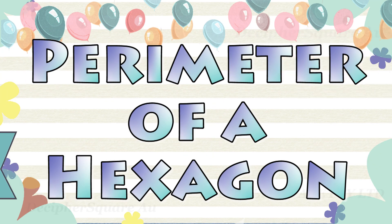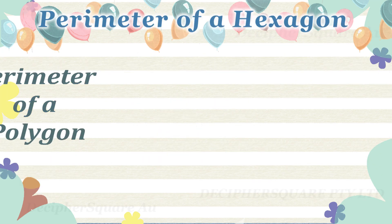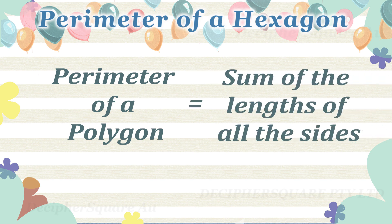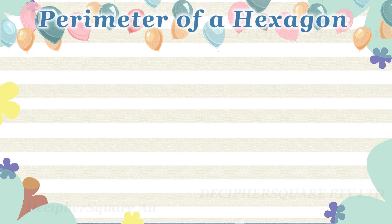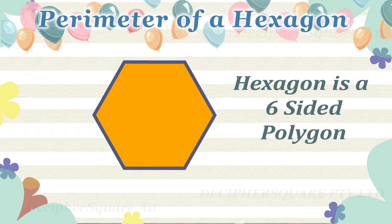Perimeter of a hexagon. The perimeter of a polygon is the sum of the lengths of all the sides of a polygon. A hexagon is a six-sided polygon.